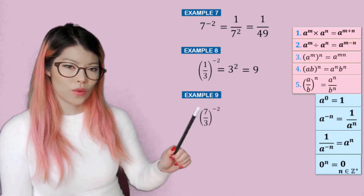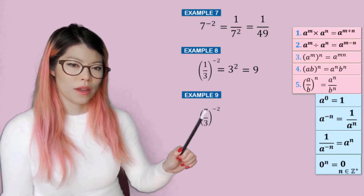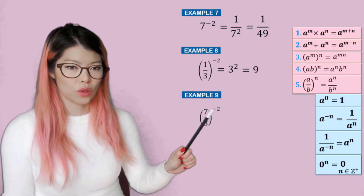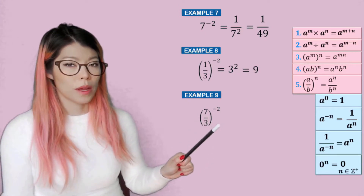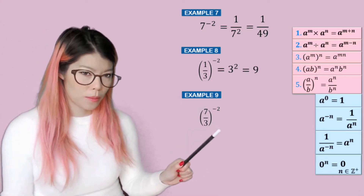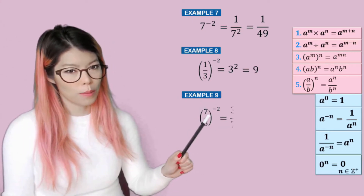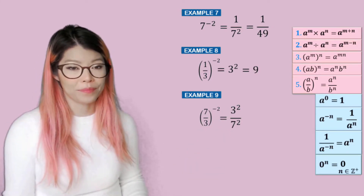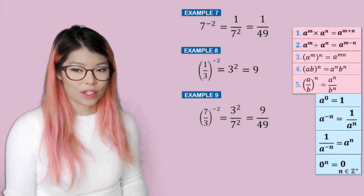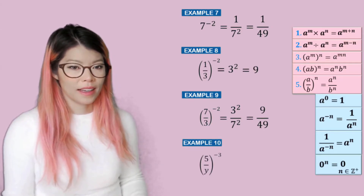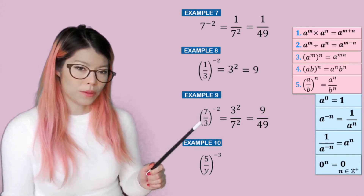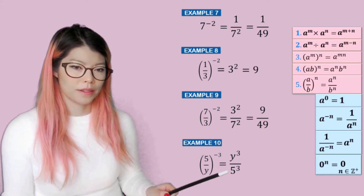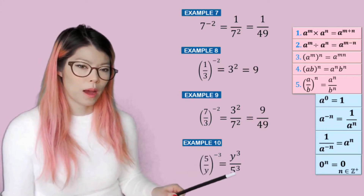Example nine: here we have seven over three to the negative two. Because it's negative, it's going to be seven to the negative two over three to the negative two. To make the power positive — if it's at the top, we bring it to the bottom; if it's at the bottom, we bring it to the top. So now we have three squared at the top and seven squared at the bottom, so that becomes nine over 49. Example ten is very similar to example nine — same concept. When you have a negative, you flip it to make a positive. So y cubed at the top, five cubed at the bottom.